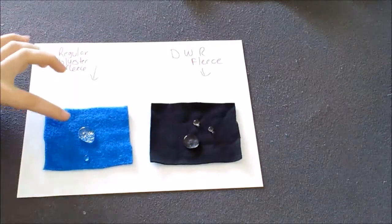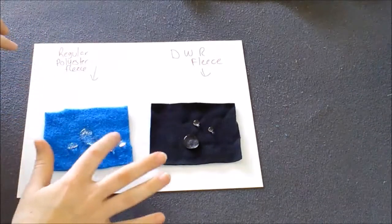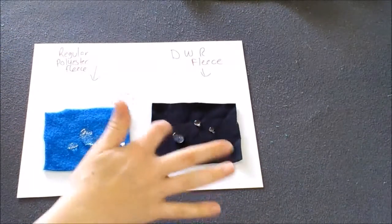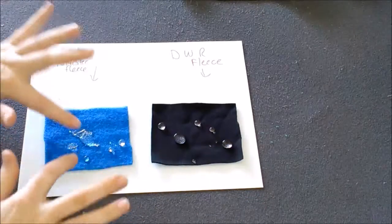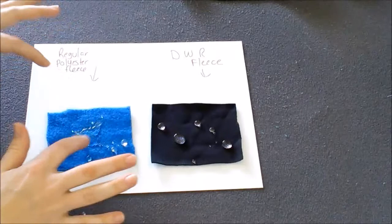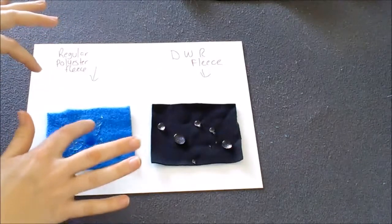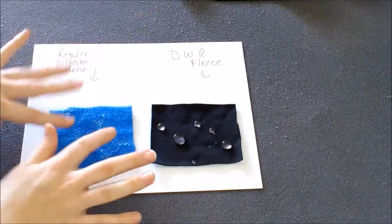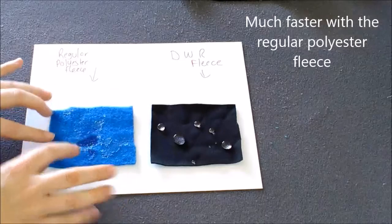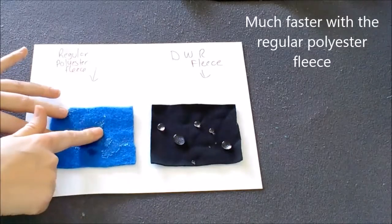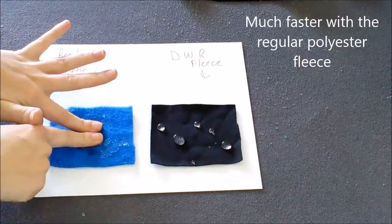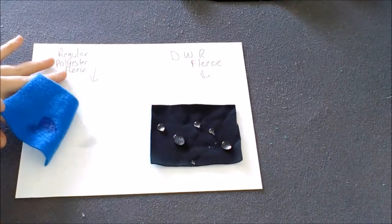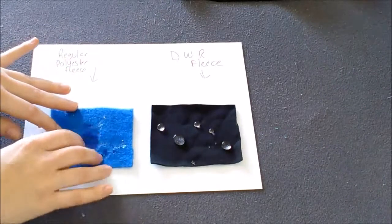Now you can see in both pictures it's kind of beading up so they're both water resistant. Now the difference is eventually the water will seep through if you have regular polyester fleece in your diaper. Just a little bit of pressure from the baby's bum will push the water through and it will start getting damp on the outside.